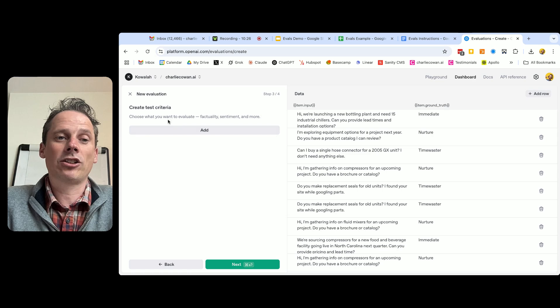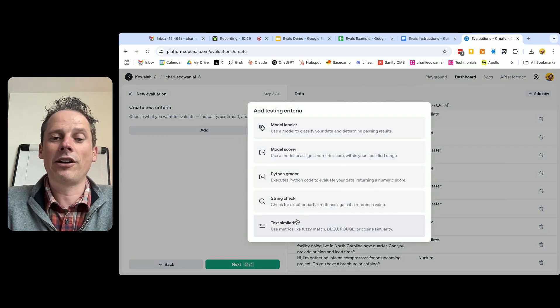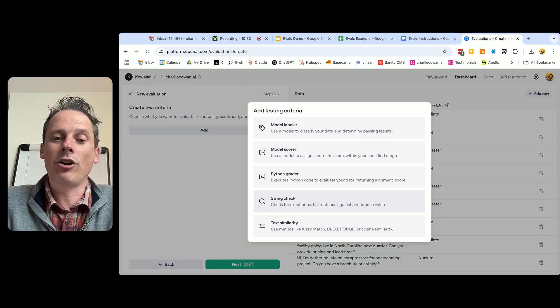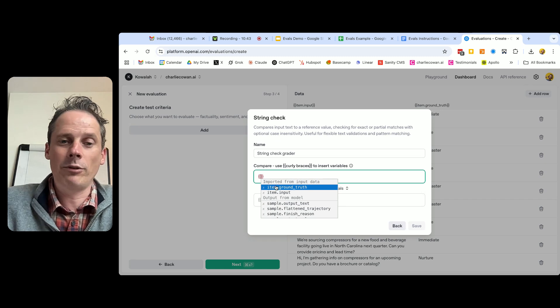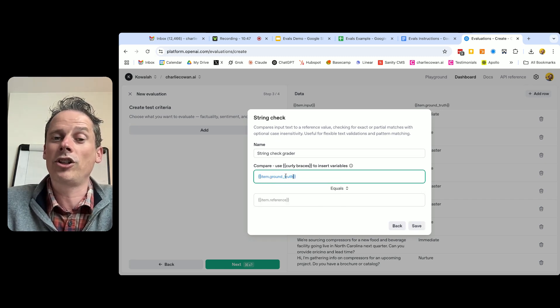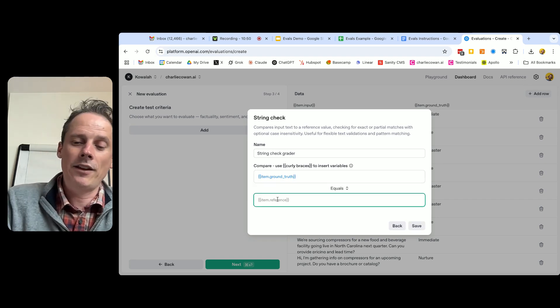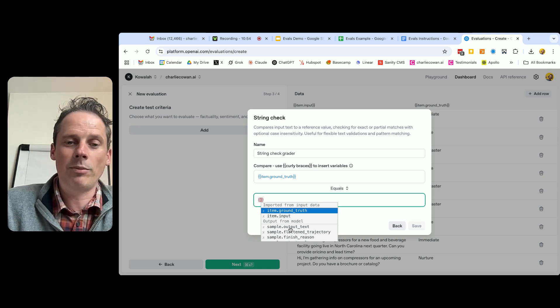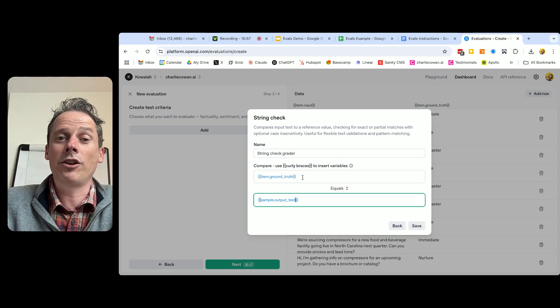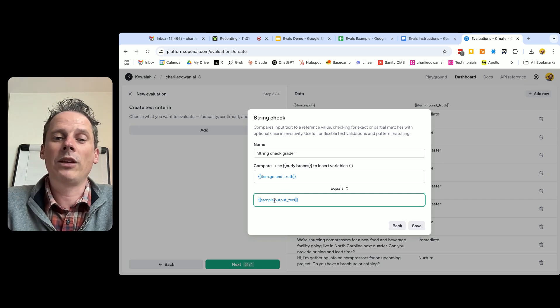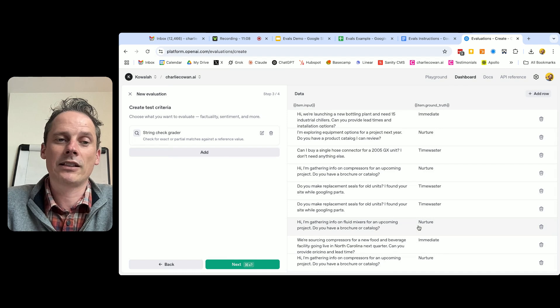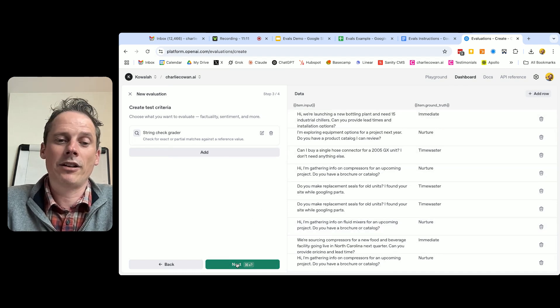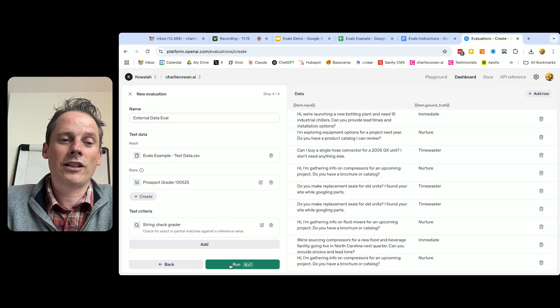Now we go to setting up our test criteria. So as I mentioned, there are a number of different ways of testing your criteria here. I'm not going to go through them all, you can come in and play with them. We're just going to do a very simple string check. So string check here, we are going to use curly braces. We want to check that our ground truth - so our ground truth is what the humans believe the response should be. And then another one, and we are going to curly braces, we want the sample output text. So here we're saying we want the ground truth, what the human thinks it is going to be, to equal the output text that is going to come from the model. Save that. And now we're going to go to next.